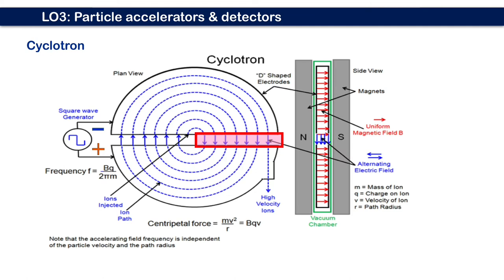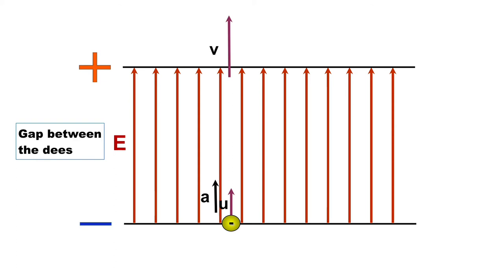The sequence of events now repeats itself. The magnetic field makes the ion move in a semi-circle back into the gap between the Ds, at which point the alternating voltage has reversed. And so the negative ion is accelerated back across the gap towards D1, which now has a positive potential once more.